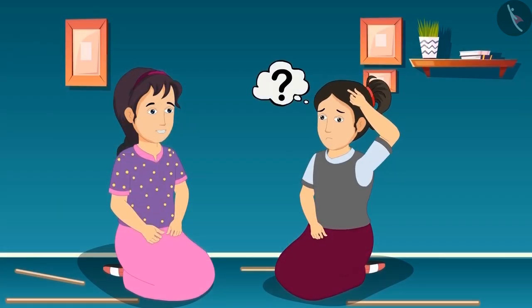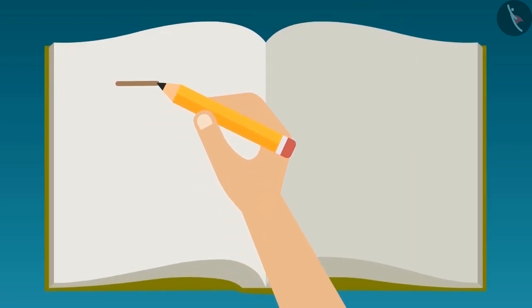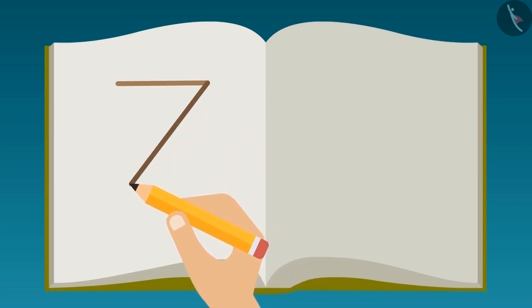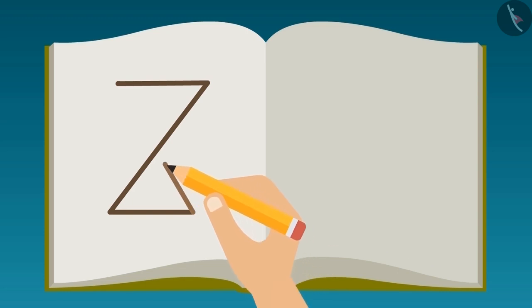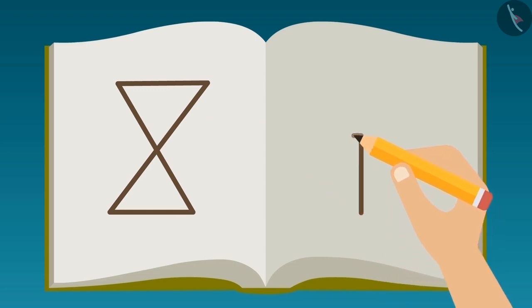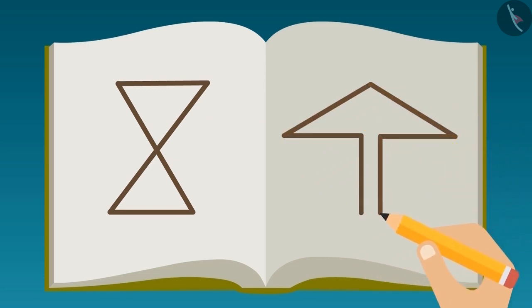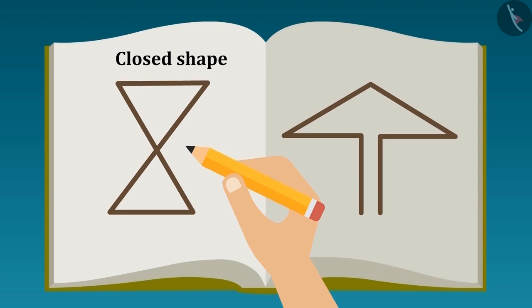Riva didn't understand what her sister said, so her sister started to draw the shapes on paper. Look Riva, if I draw this shape on paper, then this shape ends exactly where I began to draw it. But if I draw this shape, then the point where I am beginning to draw it is different from the one point where I am ending it. That's why it is a closed shape and this is an open shape.